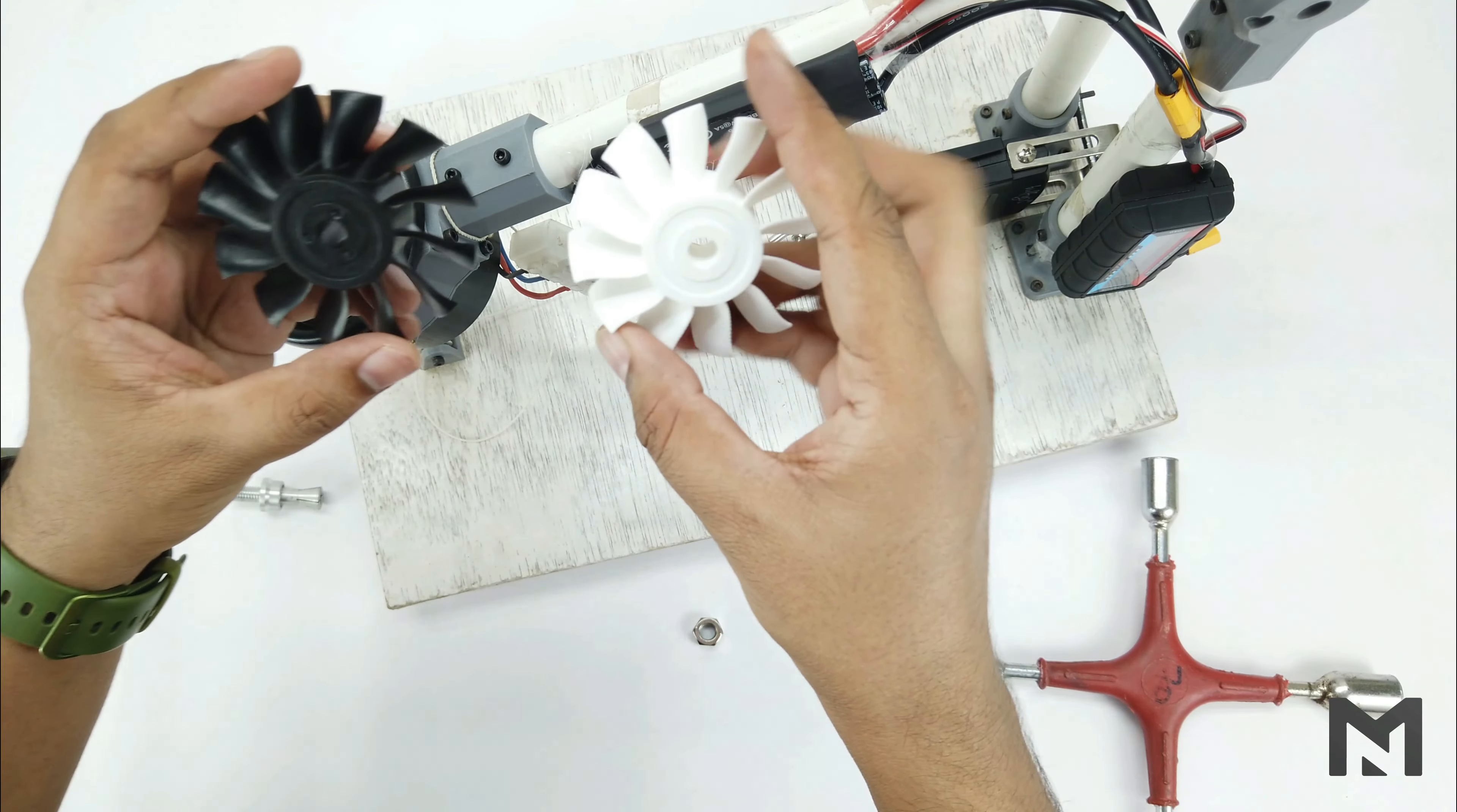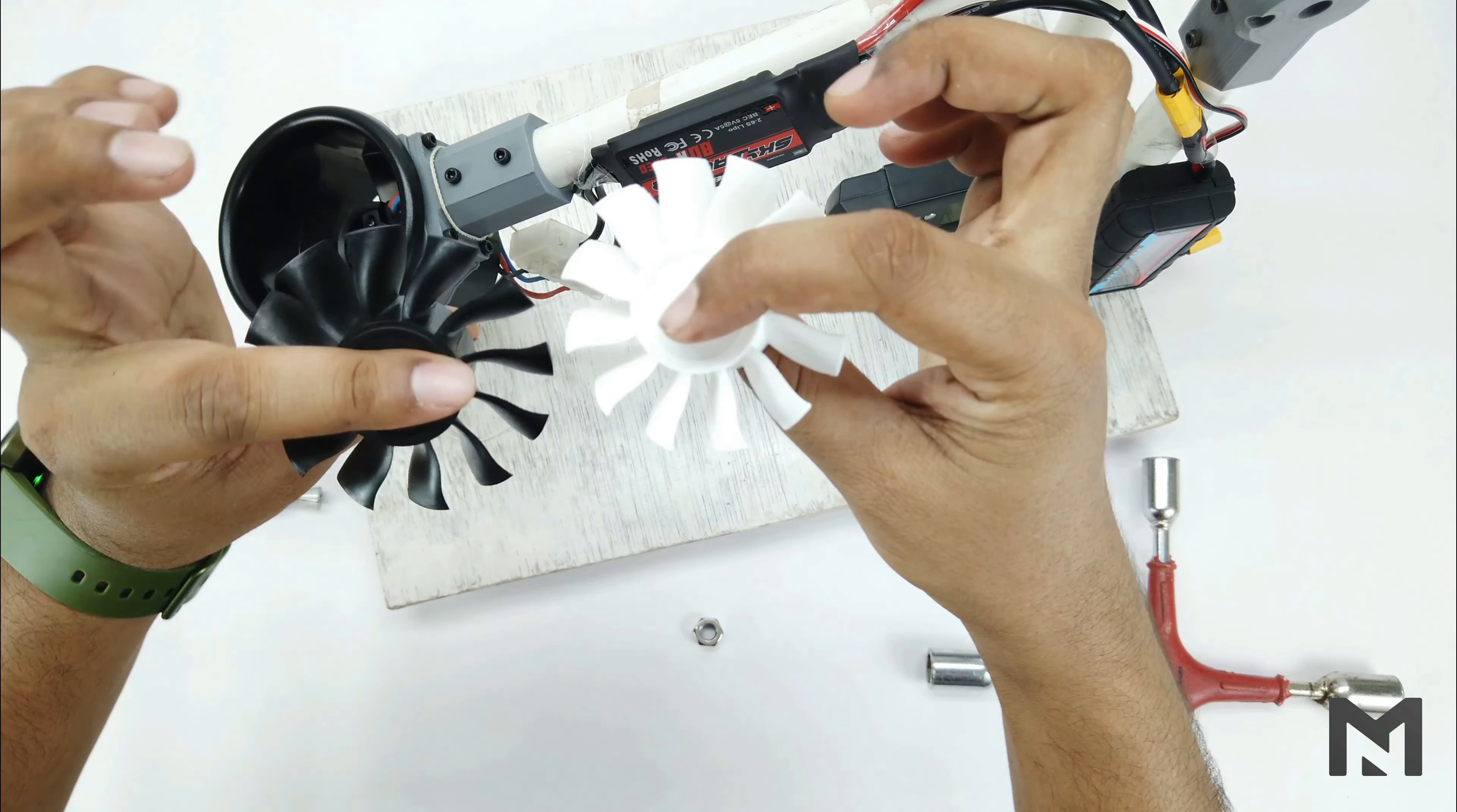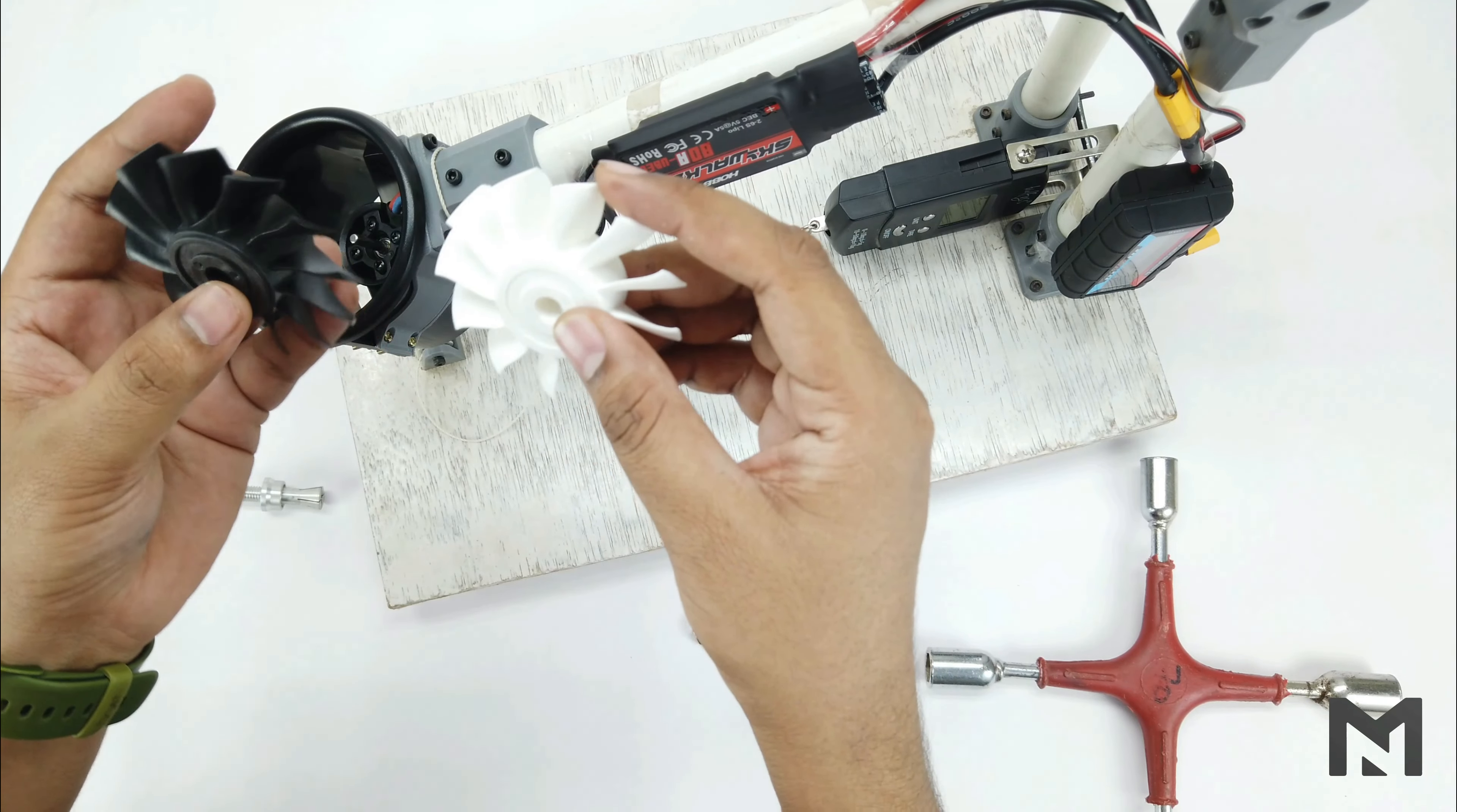You can see both these propellers are almost identical. If you even look from the sides, the shape of the blade looks exactly the same. So now we have to check if this 3D printed propeller works the same as the original one or a little less.